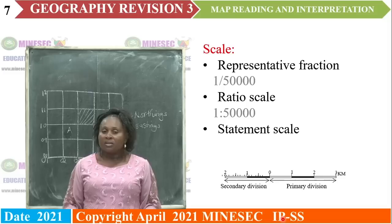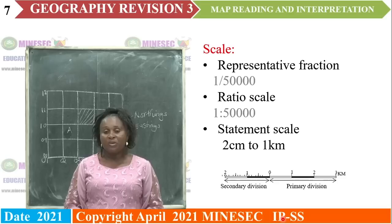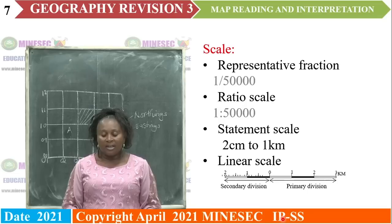Scale can also be represented in the form of a statement: two centimeters equal to one kilometer, meaning for every two centimeters on the map it is one kilometer on the ground. And it can also be represented as a linear scale — a line that has been drawn and divided into portions.